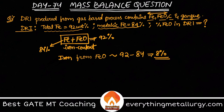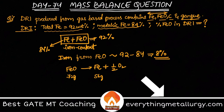So FeO has 1 mole of Fe plus 1 mole of oxygen. So that's 56 grams of Fe and 56 plus 16 = 72 grams for FeO. In other words, you can write that 72% of FeO contains 56% of iron.